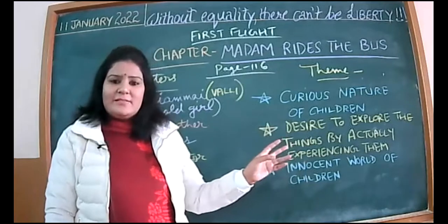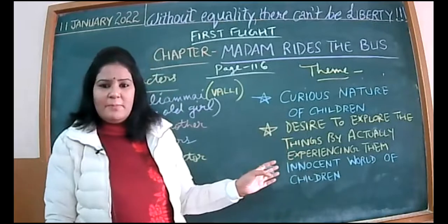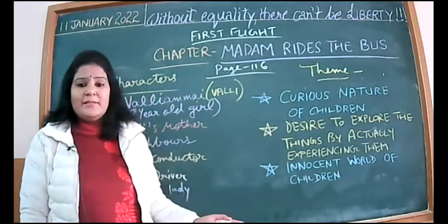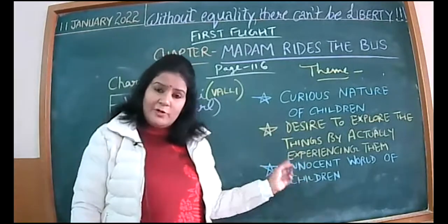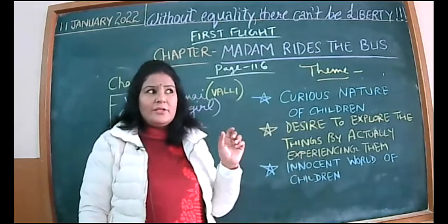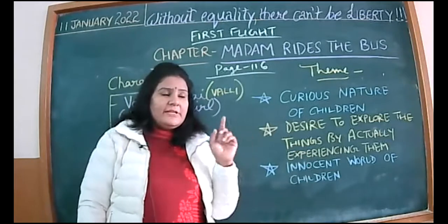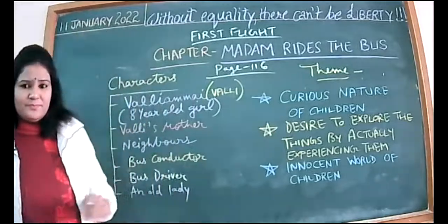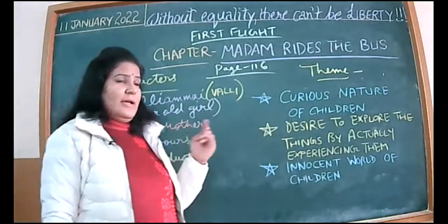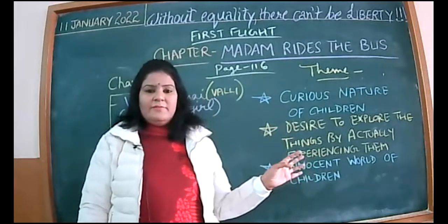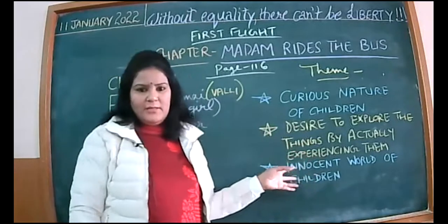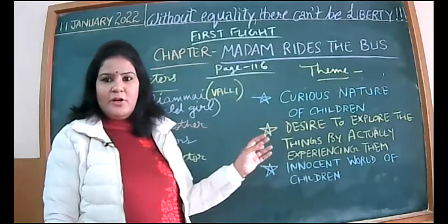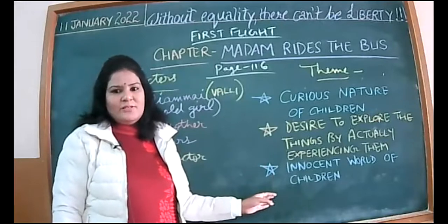If a child is curious, let them explore, but with the guidance of adults — not alone. Without guidance they may learn wrong things, but with parental guidance they learn correctly. Children desire to explore by actually experiencing things. If you stop them, they will do the opposite — they are stubborn like that.